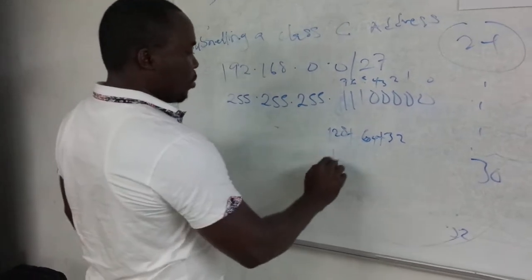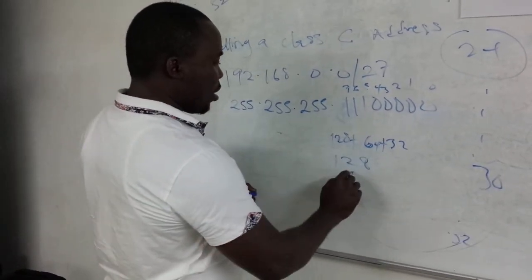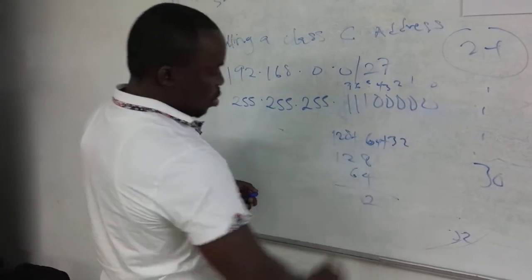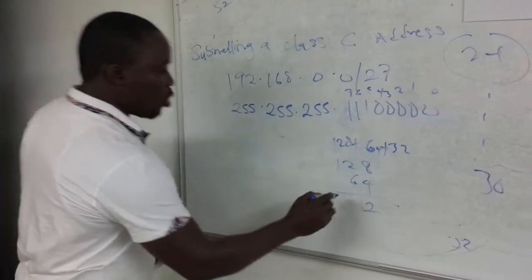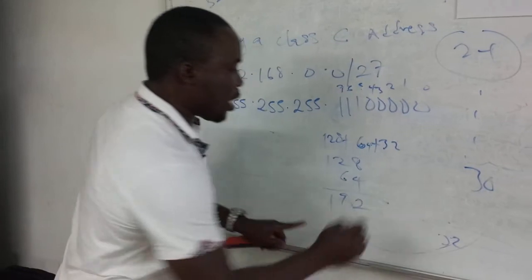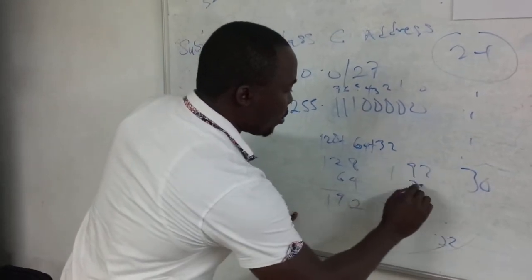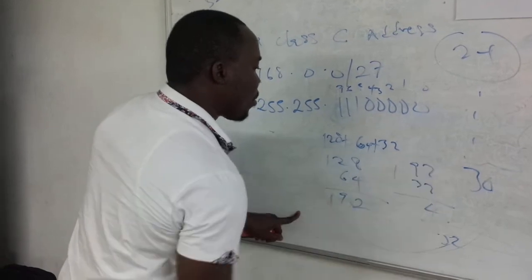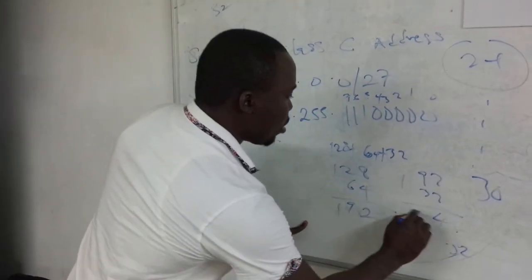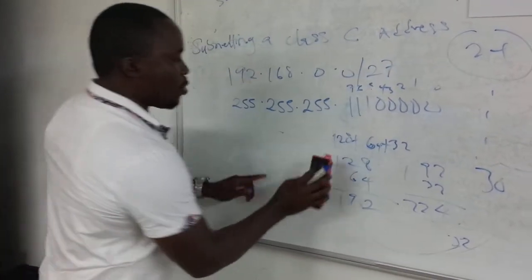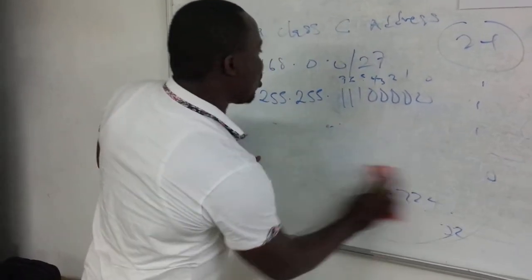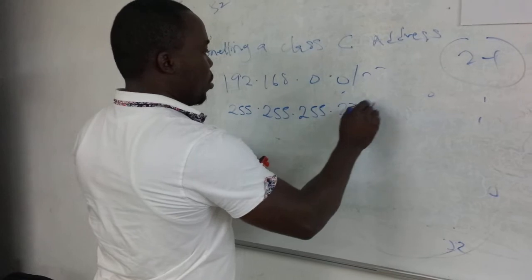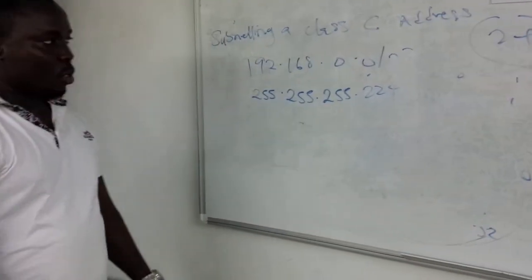So if we add up everything here: 128, 64, 32. This is going to give us... 128 plus 64 gives 192, plus 32. So it's going to be 224. So right here now, this subnet mask is 255.255.255.224 in this last octet.